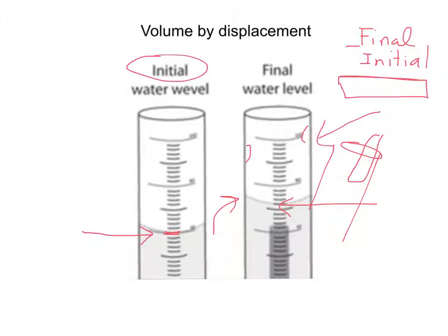Remember that when you get that volume, you need to have the right number of significant figures. Assuming you used the same graduated cylinder, you should have as many decimal places in your answer as you had in your original measurements.